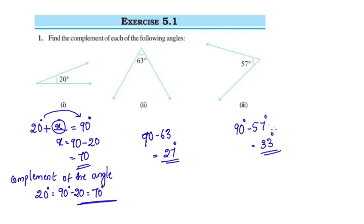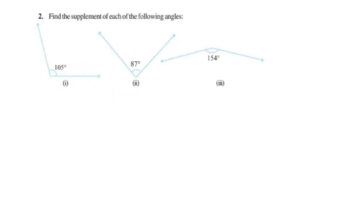So the complement of the angle 90 degrees is equal to 90. That is the end of the second question. Now find the supplementary angles of the following angles. We need to find the supplementary angles.